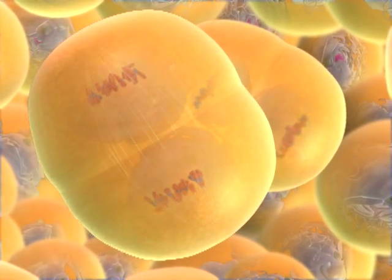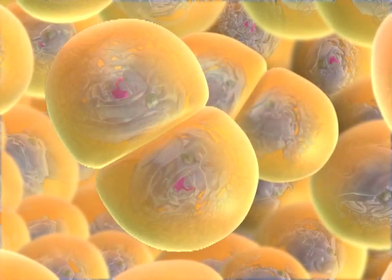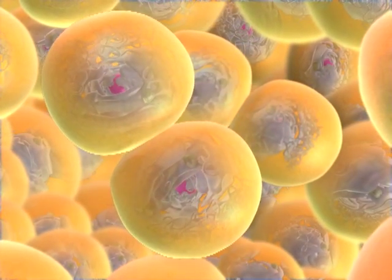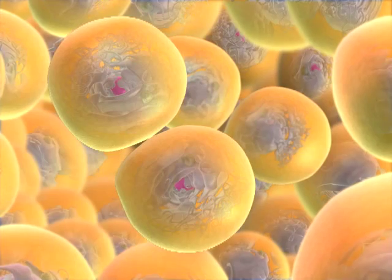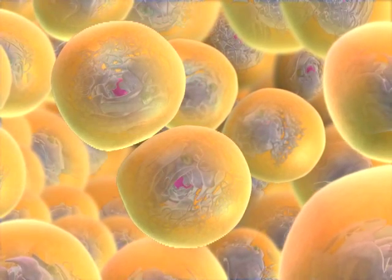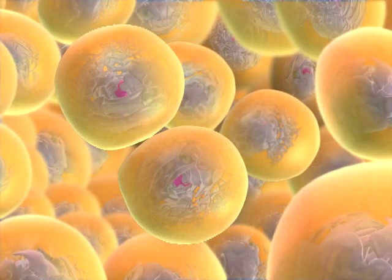Nuclear envelopes reform, and each daughter cell divides into two cells. We started with a single diploid cell, and now that meiosis is complete, we have four haploid cells, cells with a single set of chromosomes.